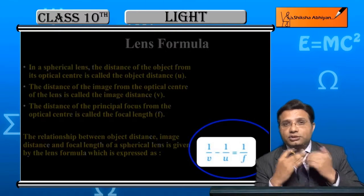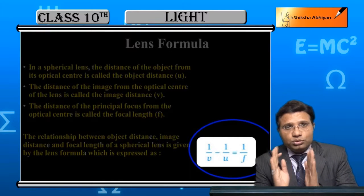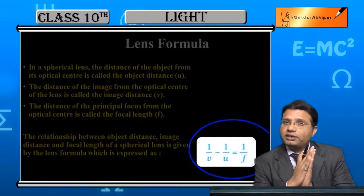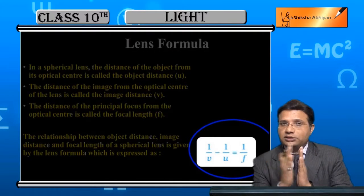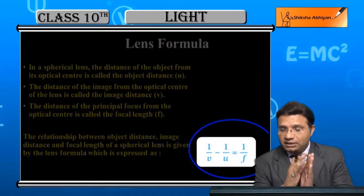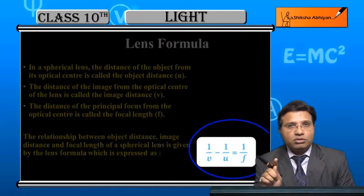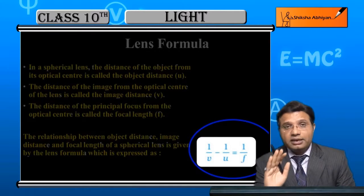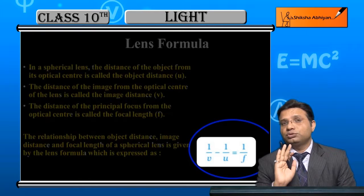इस relation का use यह है कि तीन में से अगर दो quantities known हैं तो third unknown quantity को find कर सकते हैं। अगर v और u पता है तो focal length मिल जाएगा; u और f पता है तो image distance v मिल जाएगा।